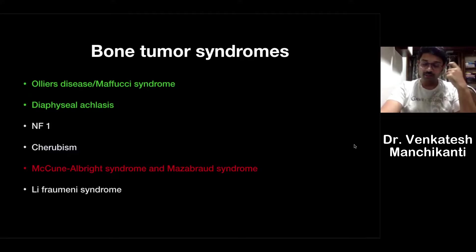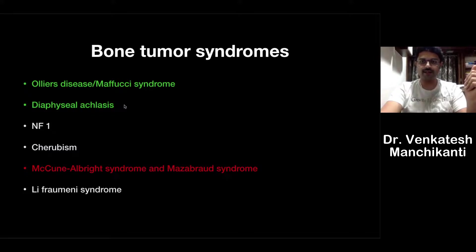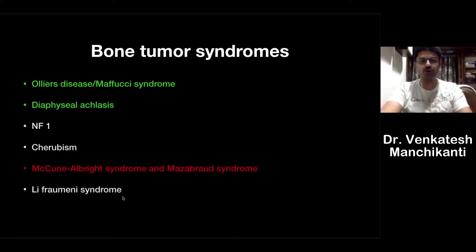Important syndromes associated with bone tumors: enchondromas — Ollier's disease and Maffucci syndrome; diaphyseal aclasis — multiple exostoses; neurofibromatosis type 1 can have multiple bony islands; cherubism; McCune-Albright syndrome associated with fibrous dysplasia; and Li-Fraumeni syndrome where bone tumors as well as GIT tumors can occur.